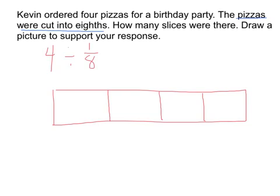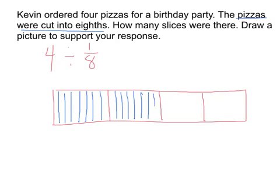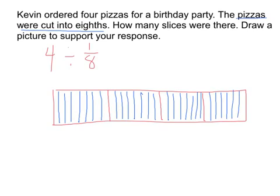So each section will be broken into 8 slices: 1, 2, 3, 4, 5, 6, 7, 8 — repeated for each of the 4 sections. Now we can count up to see how many 8ths are in one whole. We have 1, 2, 3, 4, 5, 6, 7, 8. So there are 8 eighths in one whole.